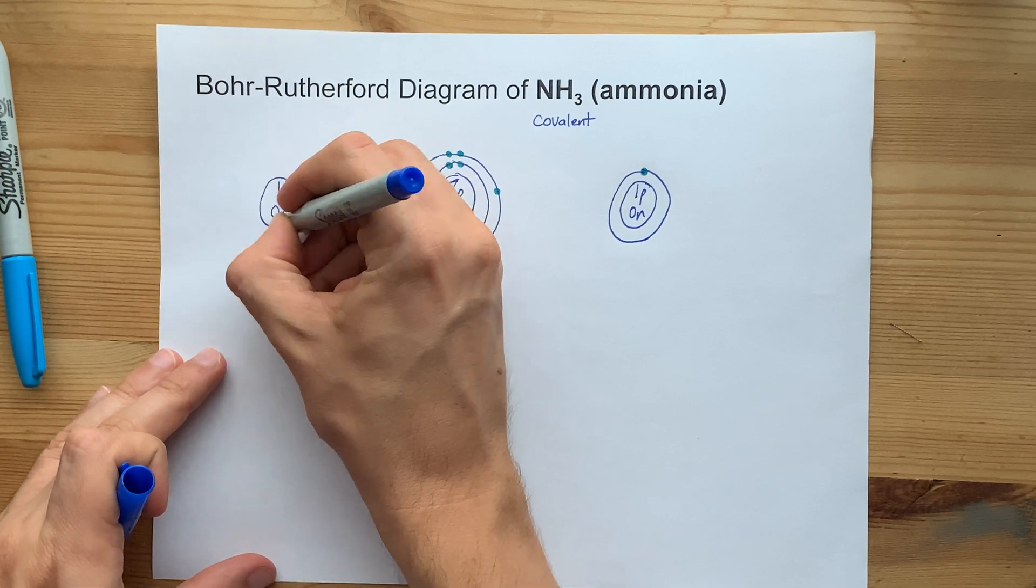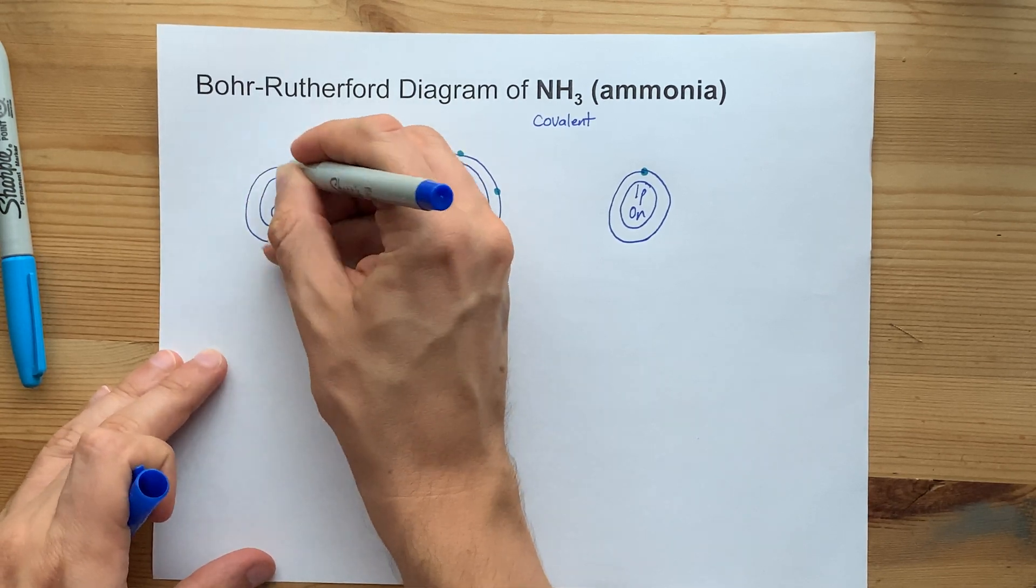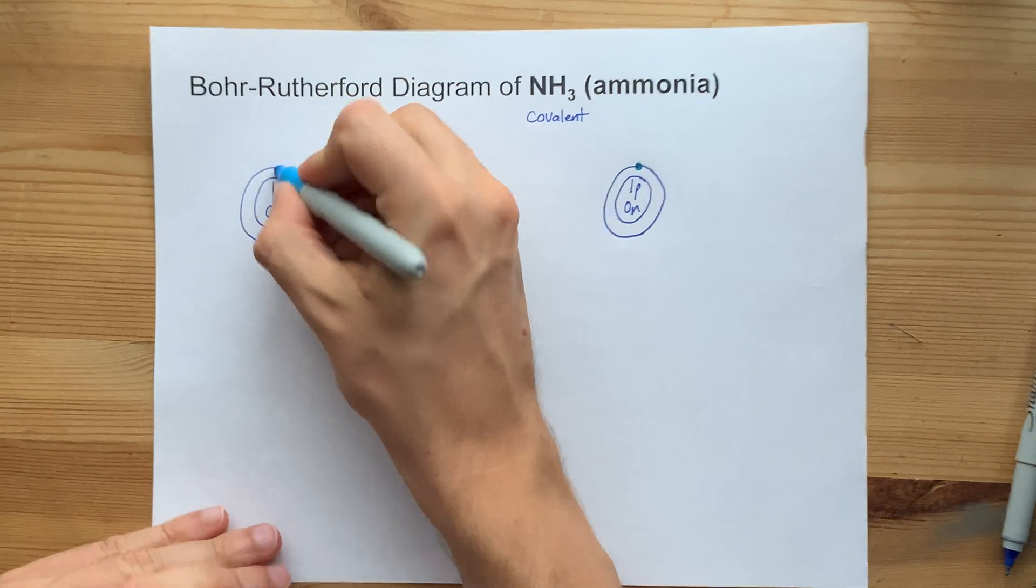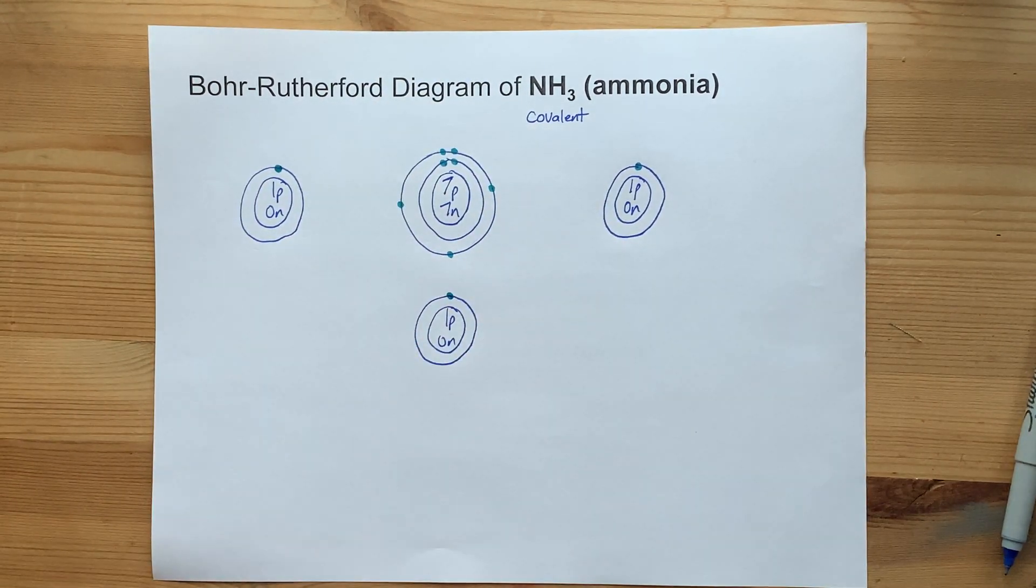One proton, no neutrons. Nucleus, first shell, one electron, one electron. Beauty.